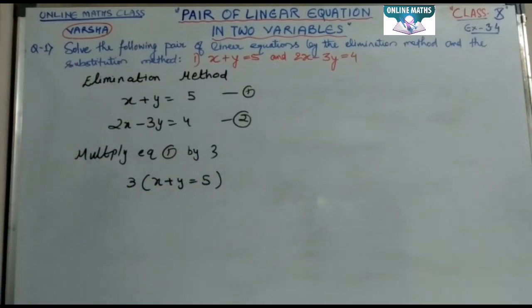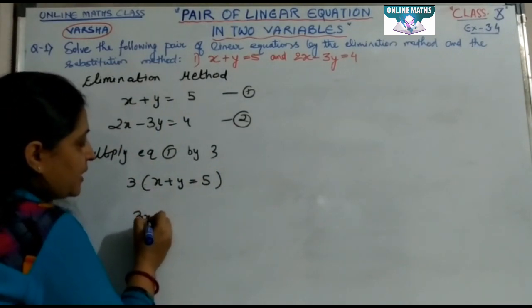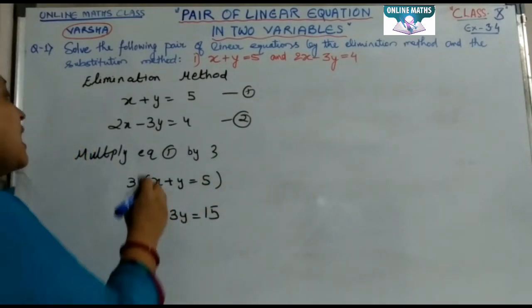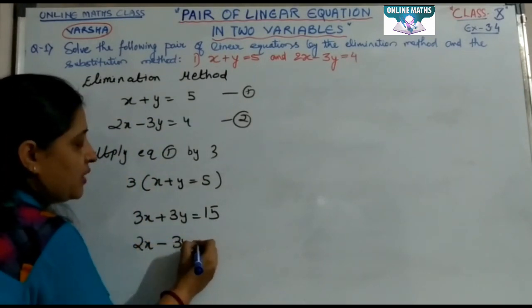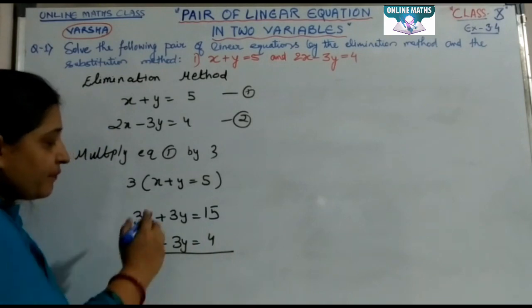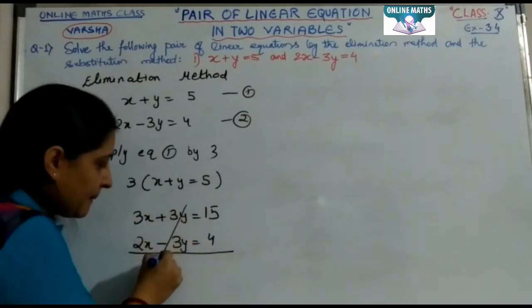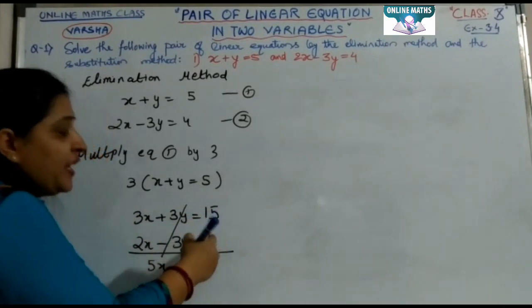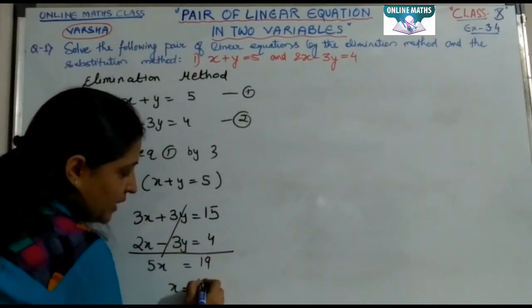You have to multiply the constant term too. So you get 3x plus 3y equals 15. You have done equation one. Now equation two remains the same: 2x minus 3y equals 4. In the elimination method, plus 3y and minus 3y cancel out. So 3x plus 2x gives 5x equals 15 plus 4, which is 19. Then x equals 19 by 5.